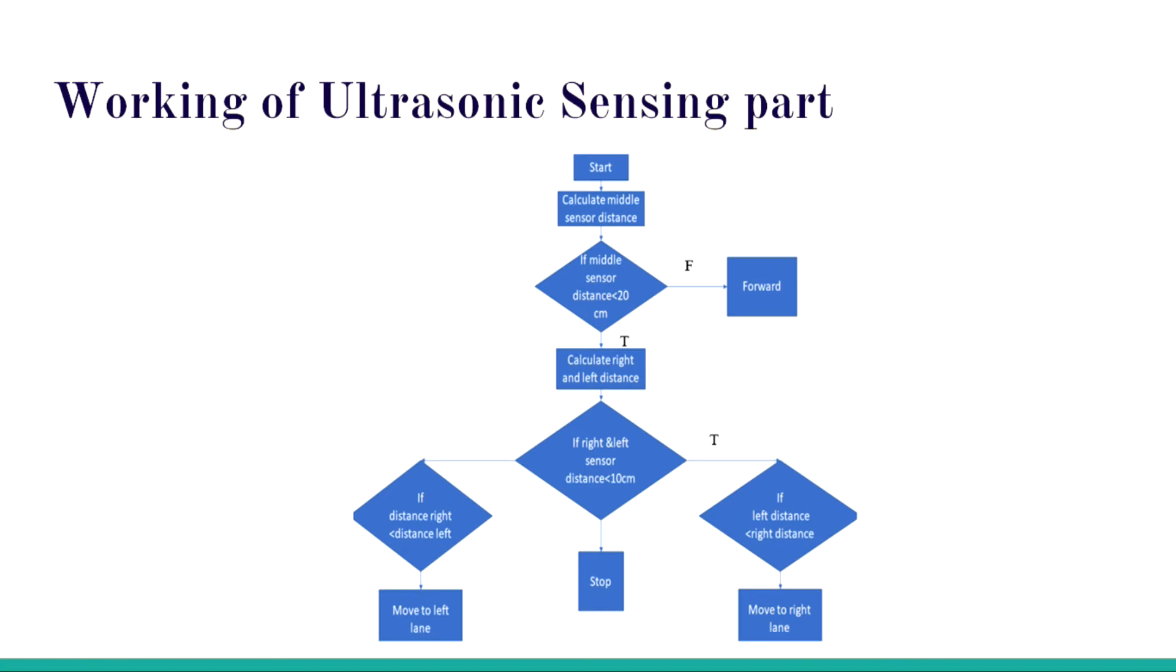The ultrasonic sensors work in this way. The model starts, it calculates the middle sensor distance. Then it checks for the right and left distance. If right distance is more, it goes to the right side. According to the prototype that we made, we programmed in such a way that if the distance in front, right and left both is less than 10 centimeters, then the model should stop. In case of traffic, it will calculate all three distances and the vehicle will stop.